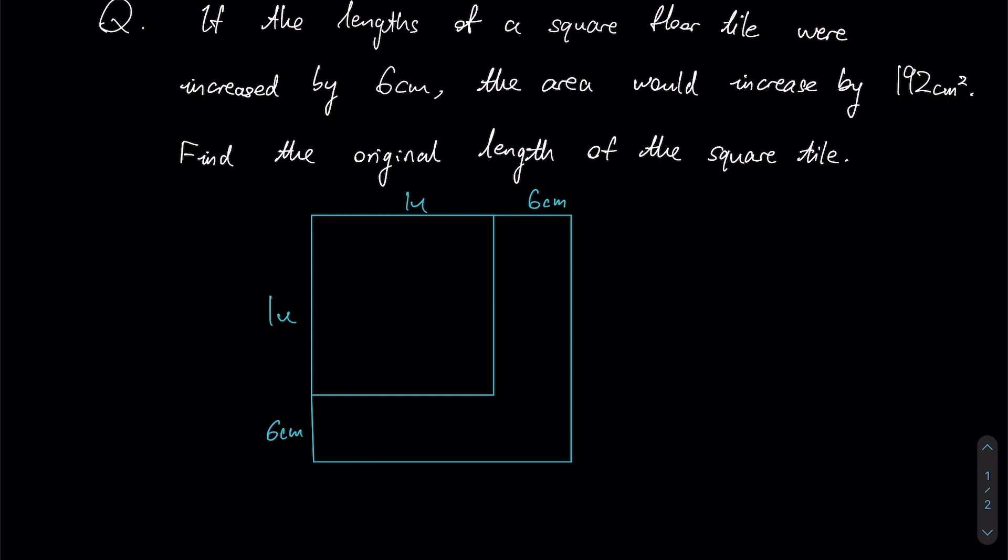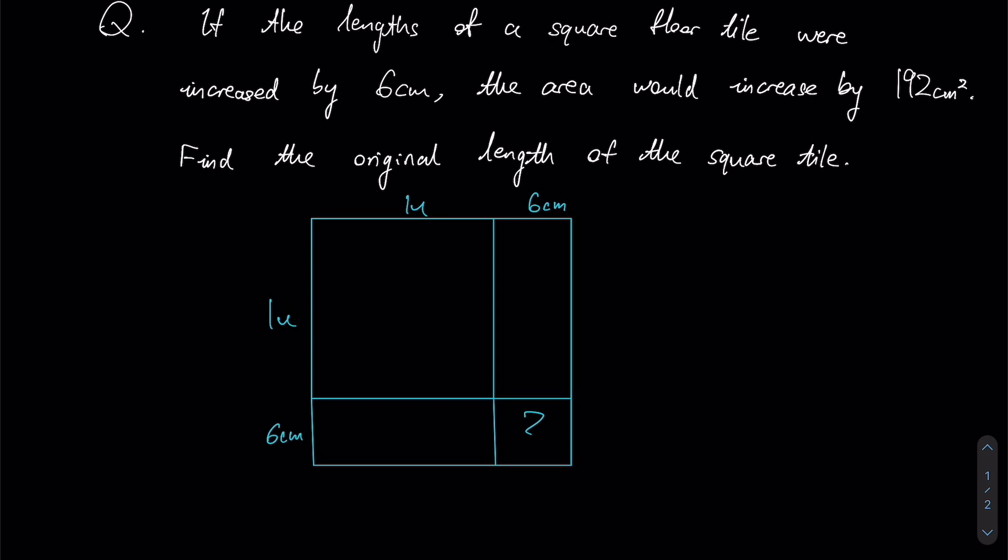So this is 6 cm and this is 6 cm. After constructing this figure, we have a smaller square as well as a larger square. And we can see that these three question marks, when added up together, represent the total increase in the area when my lengths are increased by 6 centimeters. So do we know what this area is?